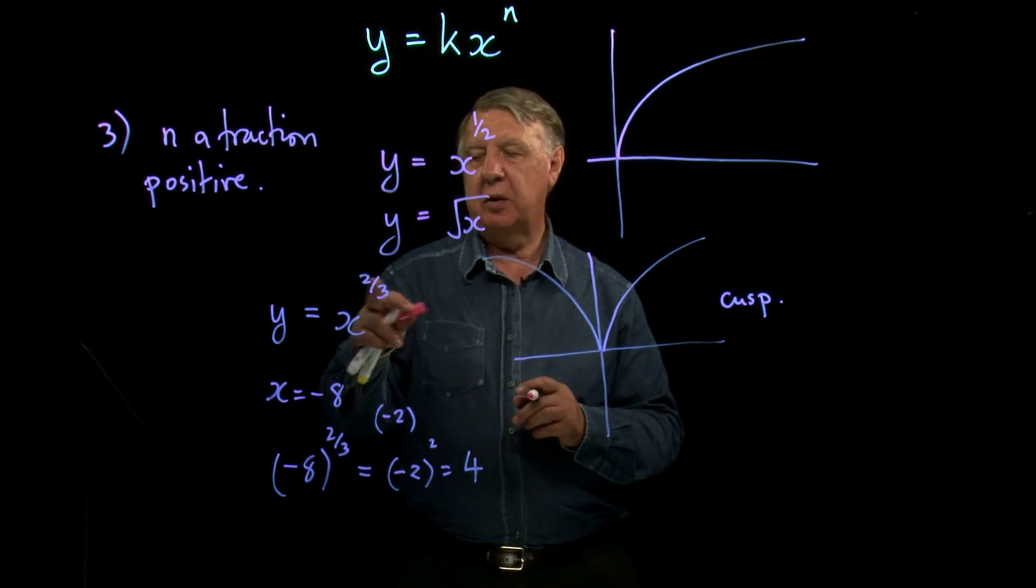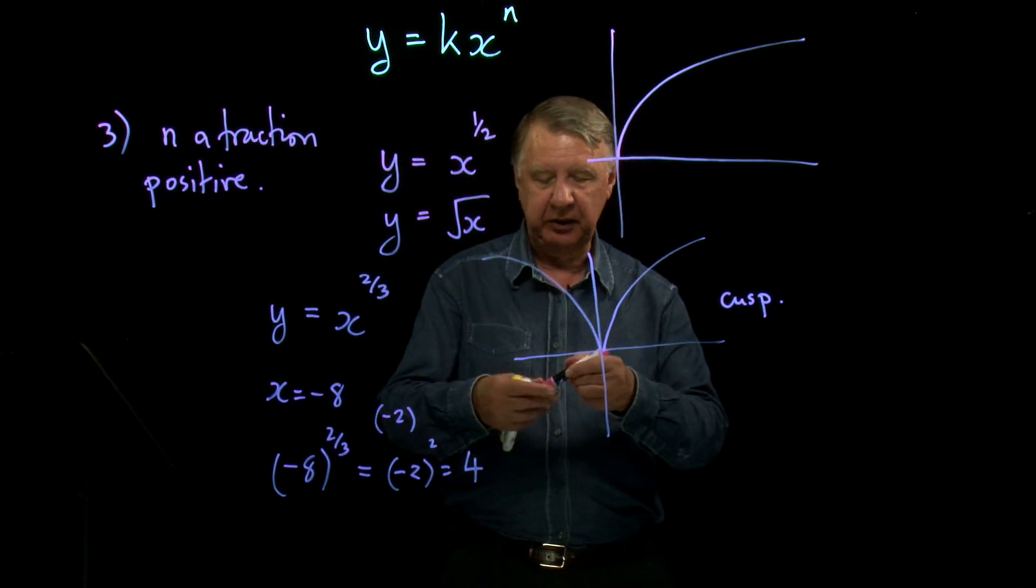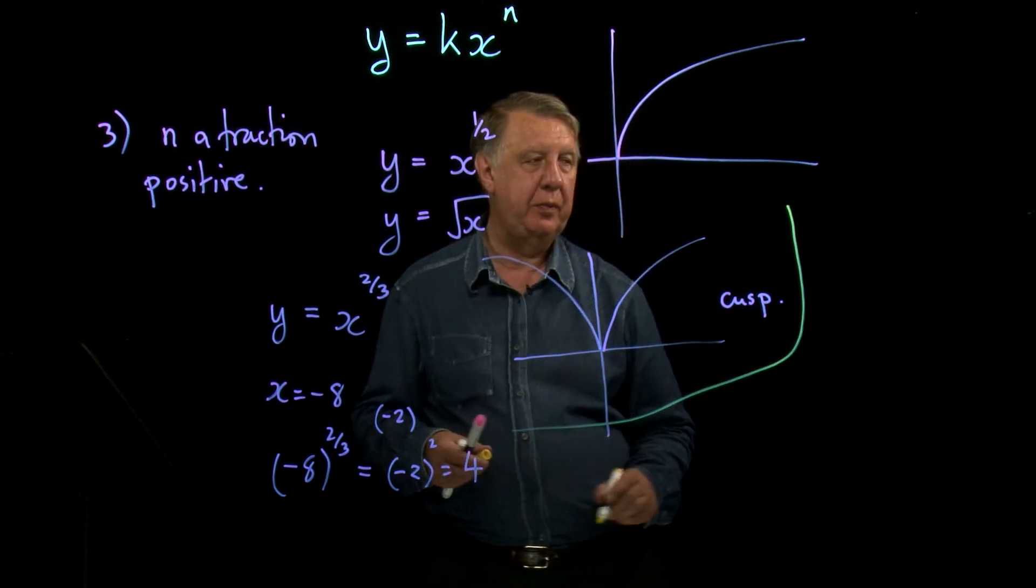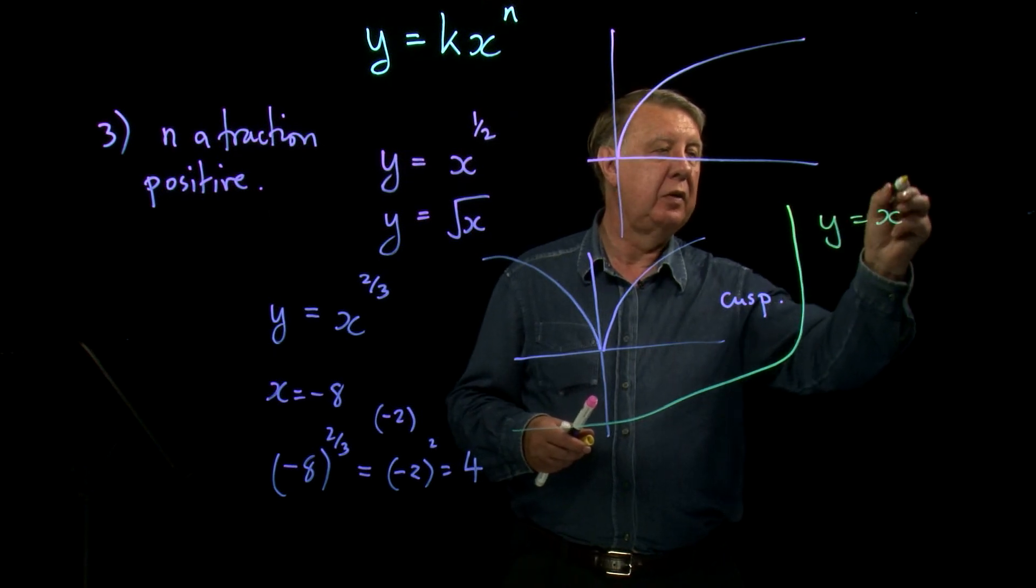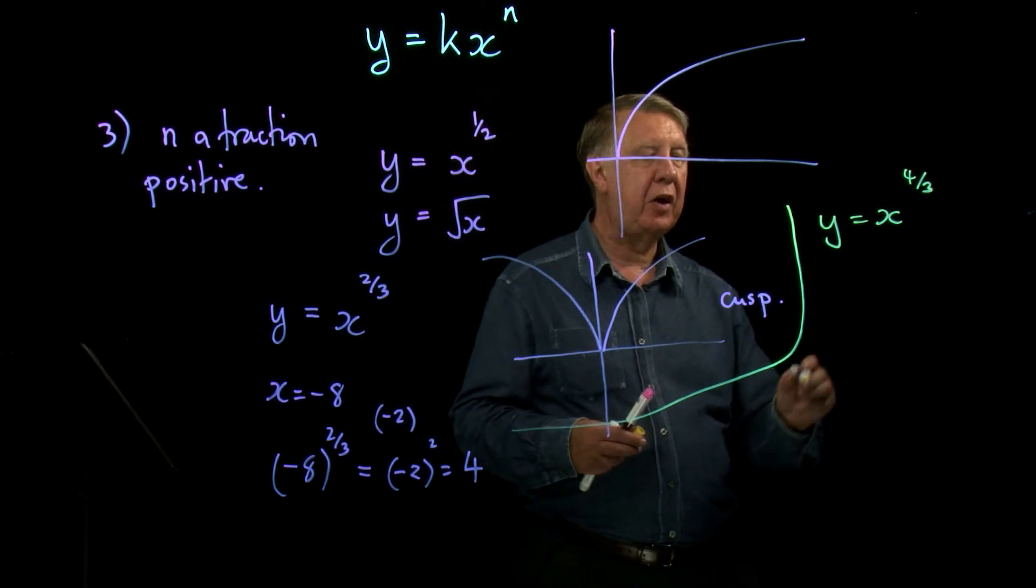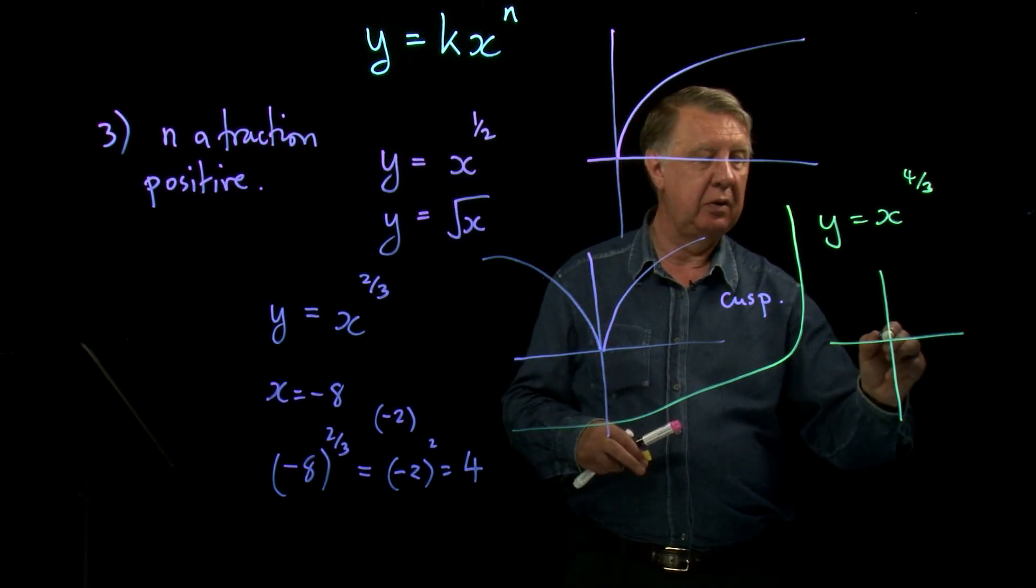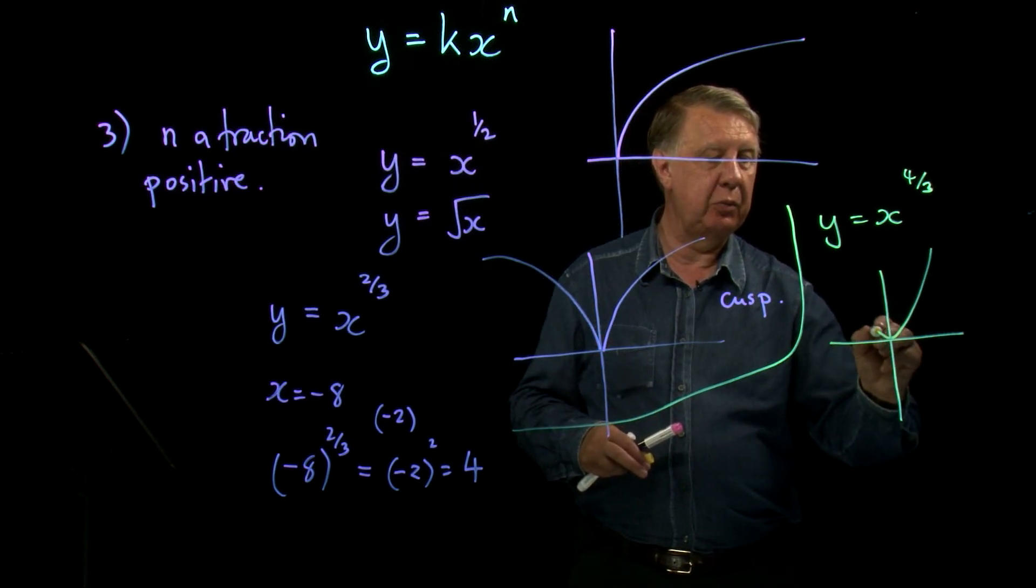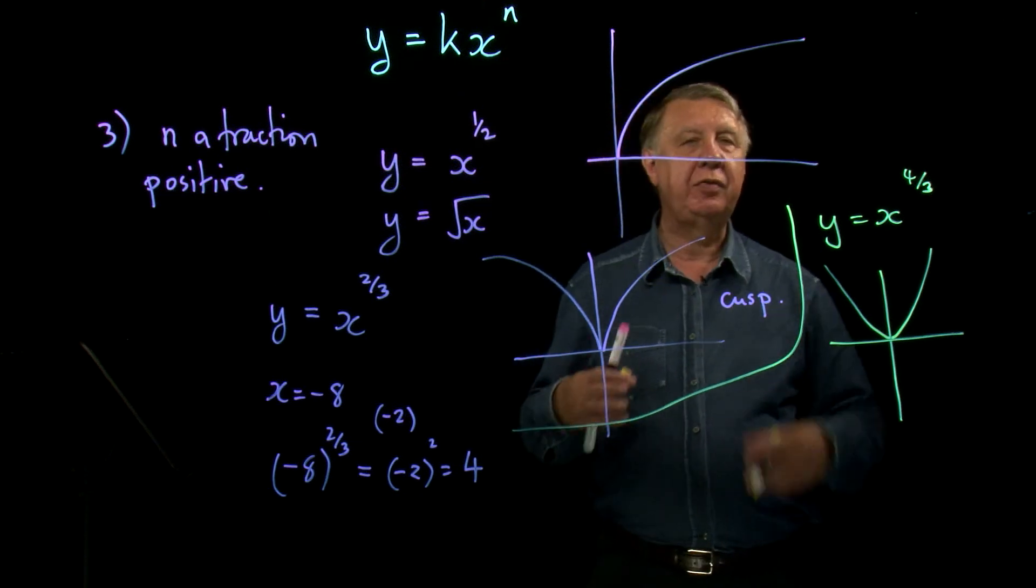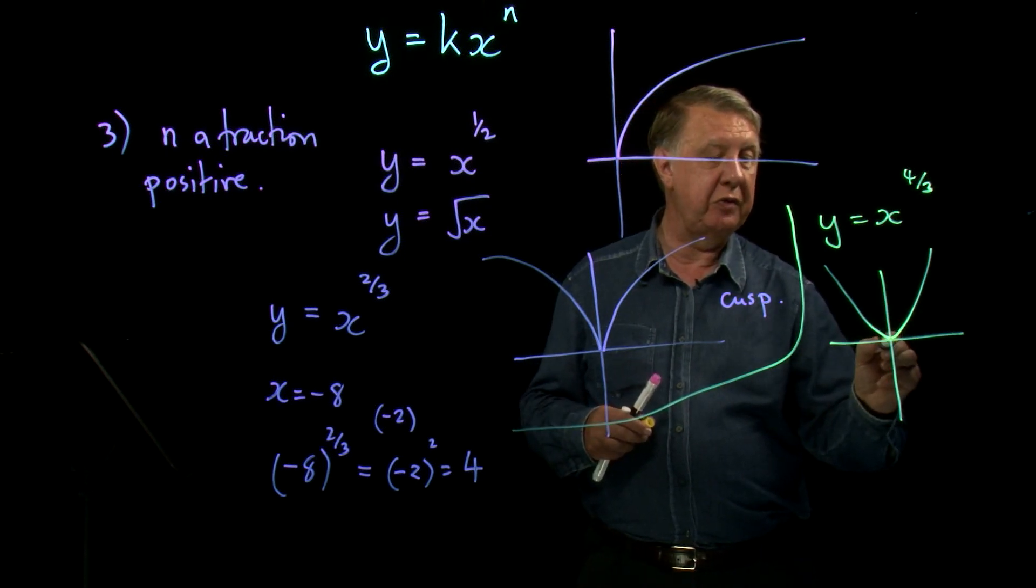But then write an equation that looks a little bit similar. Running out of space here, but I'd like to keep these all on the same board together. So let's fence off a bit. If we had x to the four thirds, then we would find that it no longer has a pointy bit, but it does more that. Again, if you were able to differentiate this, you would find that the gradient here was zero.